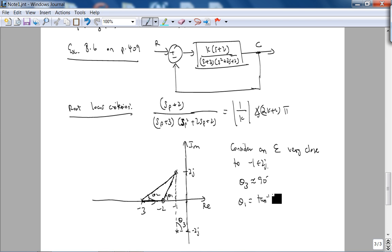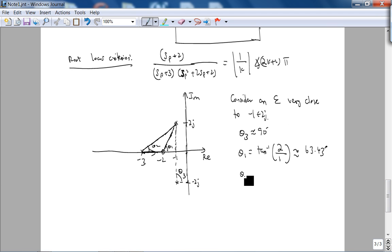I'll just use my calculator: 63.43 degrees. And θ₂ is going to be exactly equal to inverse tangent of one, which is 45 degrees. Therefore, θ₁ - θ_unknown + θ₂ + θ₃ must be 180 degrees.